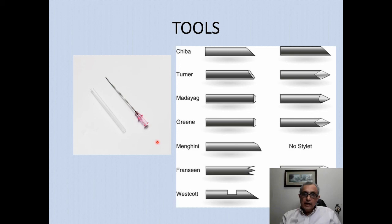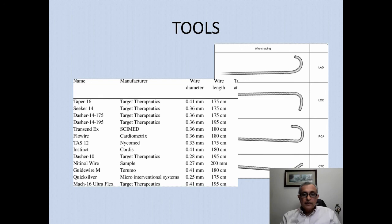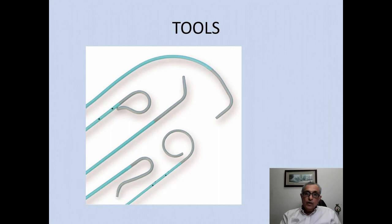What other tools are used? Needles — we use lots of different kinds, with Chiba needles used quite frequently now to gain access to various structures. We also use wires in different shapes, lengths, and diameters, as well as catheters in a variety of shapes for different purposes, to guide our wires into the necessary vessels or structures to perform the required treatments.